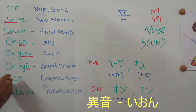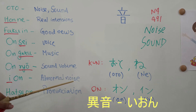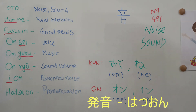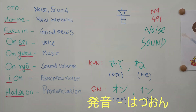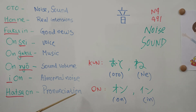The next word is 'Eon' — here 'E' refers to something strange or unusual. So it refers to abnormal noise from some device or electronic gadget. The next word is 'Hatsuon' — here 'Hatsu' refers to departure or depart. So 'Hatsuon' means the way we pronounce something — pronunciation.